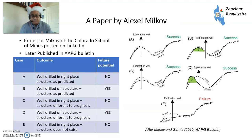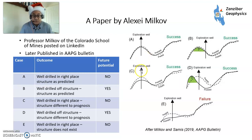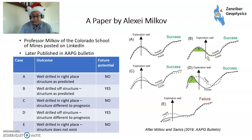This post is inspired by a social media post by Professor Alexey Milkov of the Colorado School of Mines. He published a paper with Dr. Samis in 2019 in the AAPG Bulletin, and they basically had these five scenarios. Scenario A: you drilled the well in the right place, structure was as predicted, didn't work — dry hole, no further potential. C: the well is drilled in the right place, the structure is different to prognosis, but still no further potential. E: well drilled in the right place, structure doesn't really exist, so no further potential. But the two scenarios with potential are Case B — the well was drilled off structure, but the structure is roughly as predicted from the seismic when you tie the well in, so there's potentially future potential updip from the well — and Case D, where the well has been drilled off structure and the structure is way different to what you proposed, perhaps due to velocity changes, and there's potential for future exploration work.